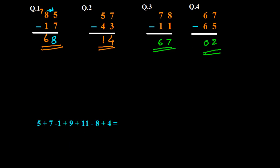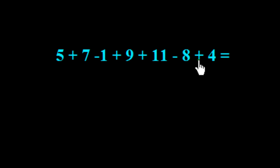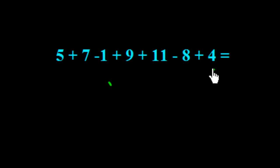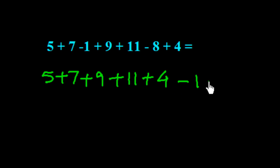Now I will explain a series of numbers: 5 plus 7 minus 1 plus 9 plus 11 minus 8 plus 4. To simplify this kind of series, we first arrange all the positive numbers together and all the negative numbers together. So we get: 5 plus 7 plus 9 plus 11 plus 4, then minus 1 minus 8.